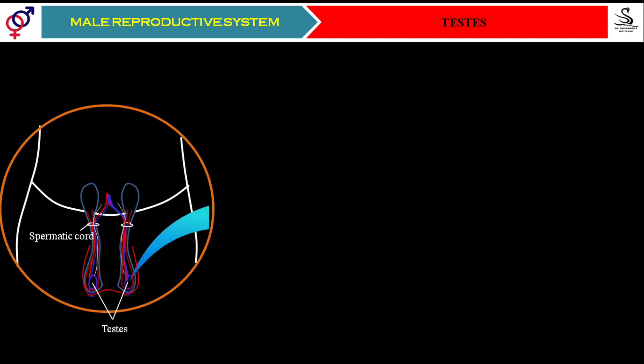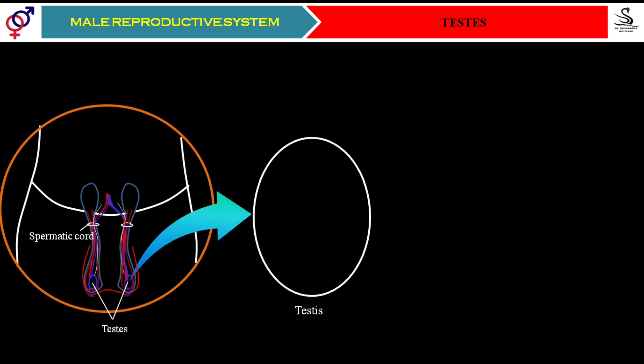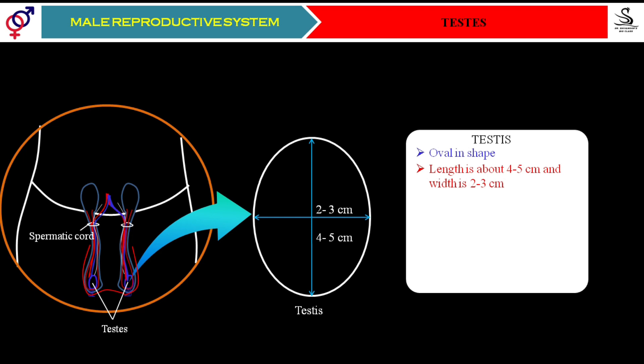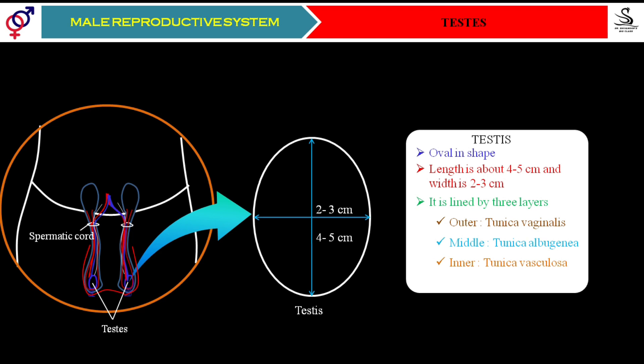Today we are going to discuss about the testes. We will magnify one of the testes and understand it in detail. The testes is oval in shape, having a length of about four to five centimeters and width of about two to three centimeters. Each testis is covered by three different layers: the outer layer is called tunica vaginalis, the middle is called tunica albuginea, and the inner one is called tunica vasculosa.